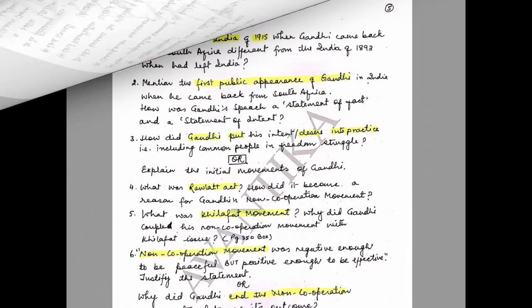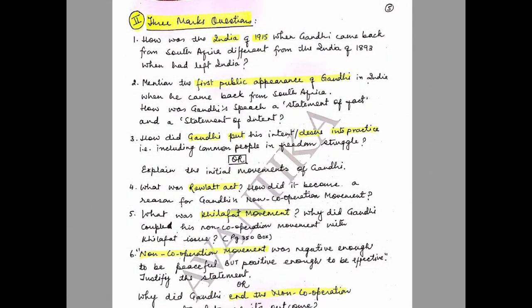With this we come to the end of the first segment, that is one-mark questions. Starting with the second part — three-mark questions. Question 1: How was the India of 1915, when Gandhi came back from South Africa, different from the India of 1893 when Gandhi left India?